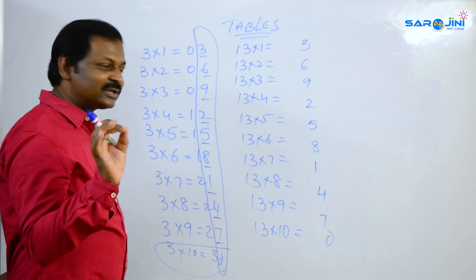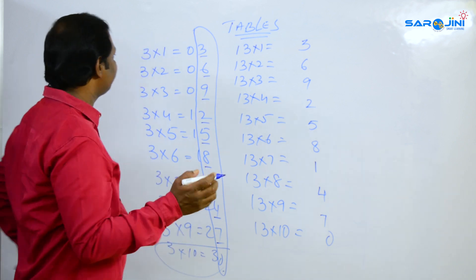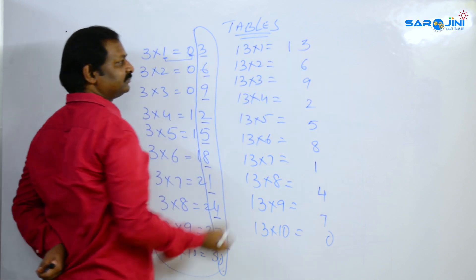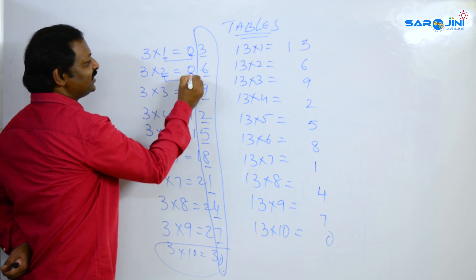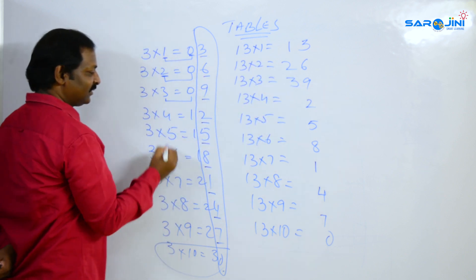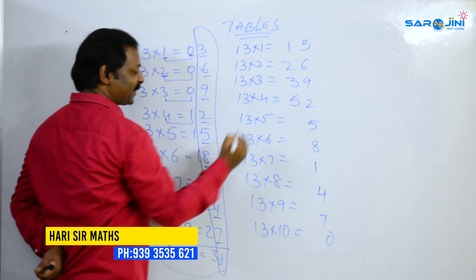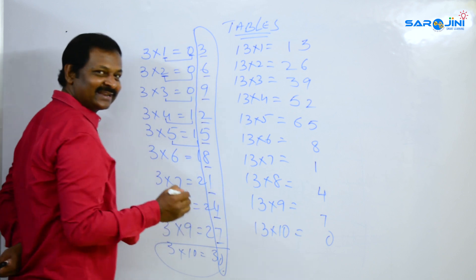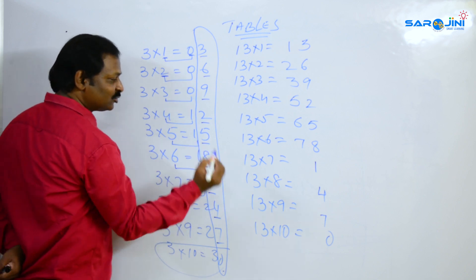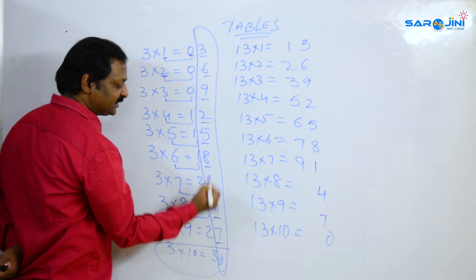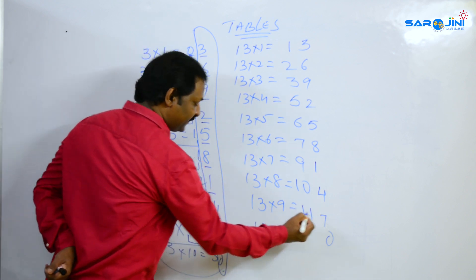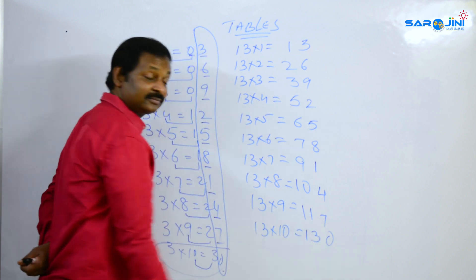Simple. Clean numbers. Just: 1 plus 0 = 1, 2 plus 0 = 2, 3 plus 0 = 3, 4 plus 1 = 5, 5 plus 1 = 6, 6 plus 1 = 7, 7 plus 2 = 9, 8 plus 2 = 10, 9 plus 2 = 11, 10 plus 3 = 13. So simple.